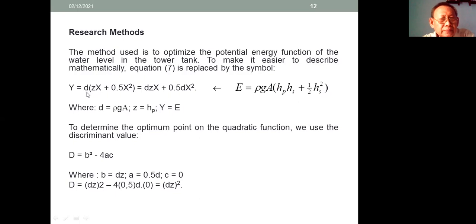So Y = D(CX + 1/2 X²) = DCX + 1/2 DX², where D = ρGA, C = HP, and Y = E.